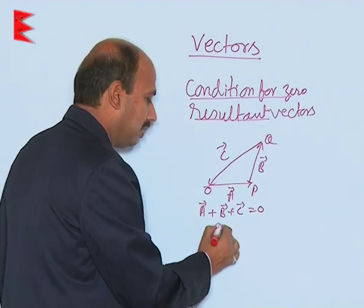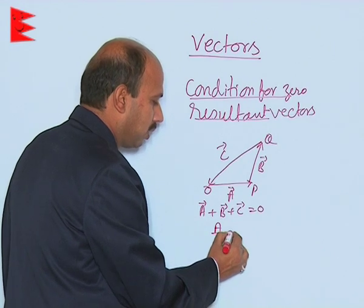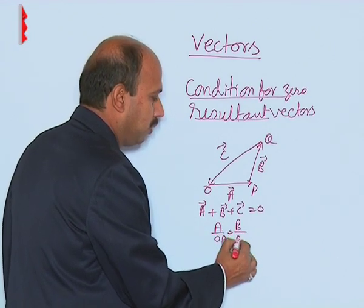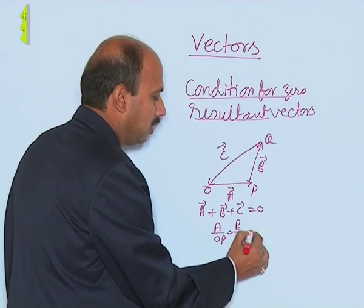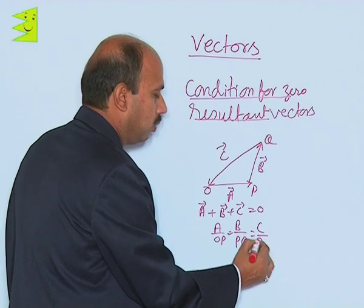Also, we can write here: a upon OP is equal to b upon PQ is equal to c upon QO.